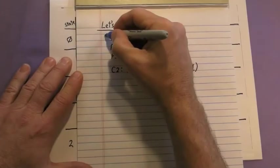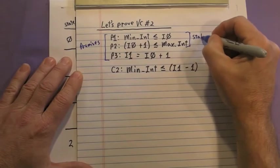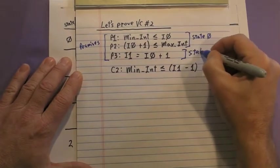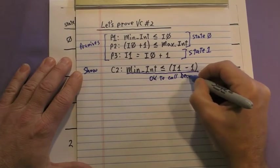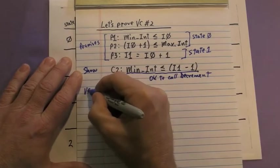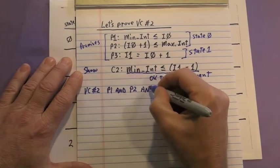Here, we have all three premises. P1 and P2 come from state 0, P3 from state 1. We have to show C2, the precondition for decrement. We'll write out VC number 2 as P1 and P2 and P3 implies C2.